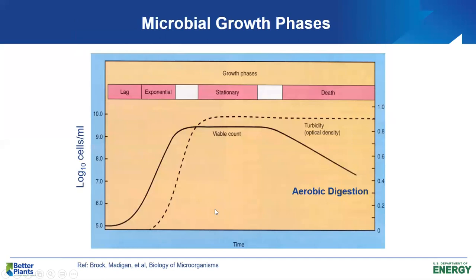Looking at our microbial growth curve, we have several growth phases: lag, exponential growth, stationary growth, and then the death or endogenous phase. When we operate activated sludge, we normally operate somewhere in the stationary phase into the death or endogenous phase. So when the sludge comes out, it's partially oxidized but still has some biomass that needs digestion. In aerobic digestion, we push it further into endogenous decay and try to fairly completely oxidize that biomass to CO2, water, ammonia, and other end products.